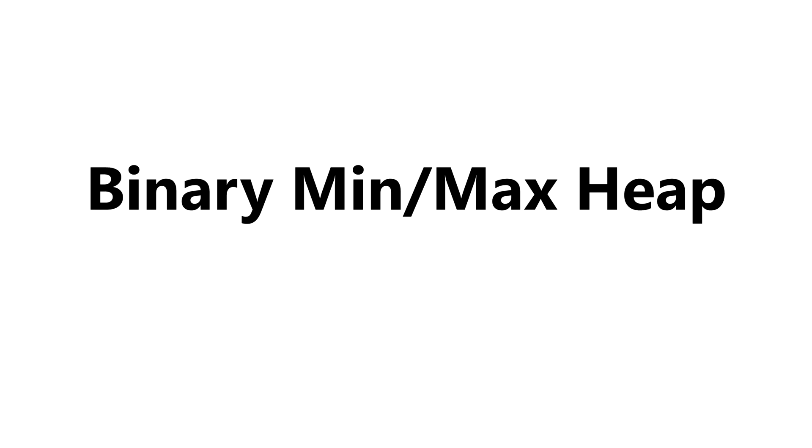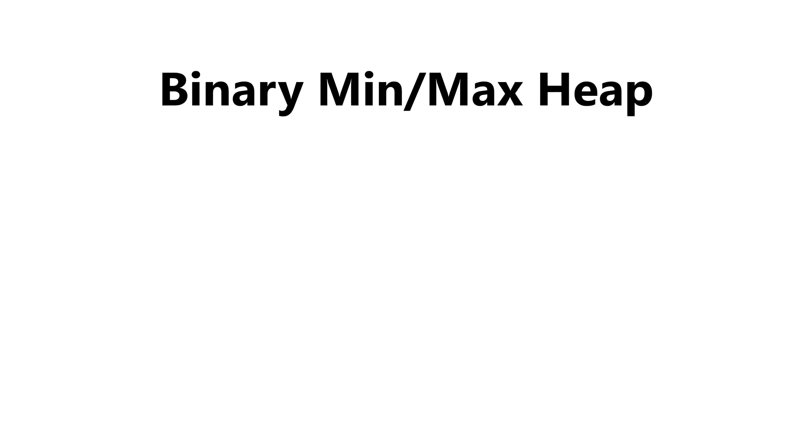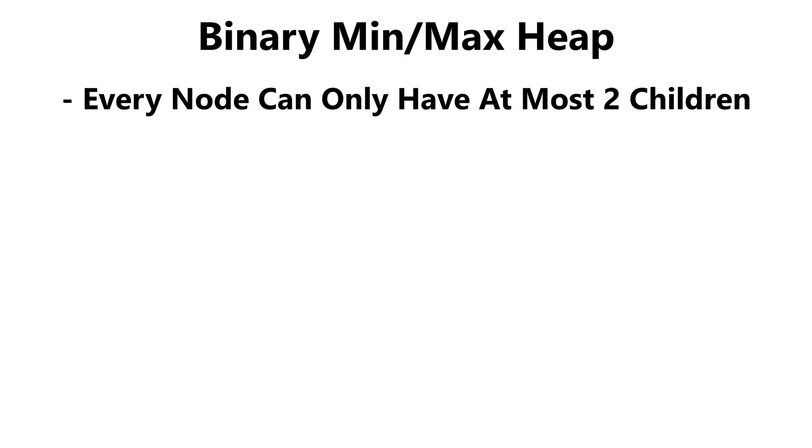So a heap is a tree data structure that has the following properties. Each node can only have, at most, two children. Now, the second thing you need to have differs between whether or not you're implementing a minimum heap or a maximum heap.